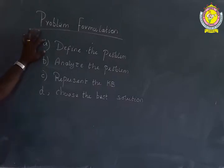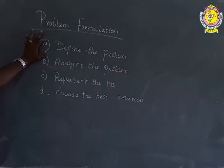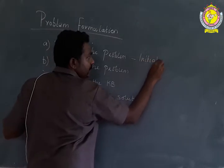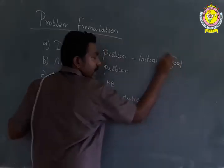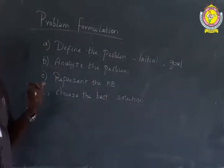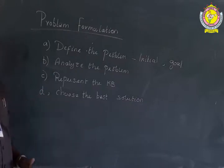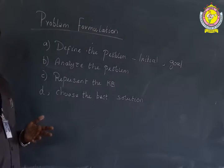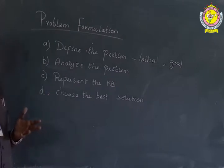The first and most important step is to define a problem. So whatever the problem is given, first we have to define it by stating what is the initial state and which one is the goal state. For example, to throw a ball into a basket, the initial state will be a man or machine standing at a place called room A, and the goal is to throw the ball into the basket.